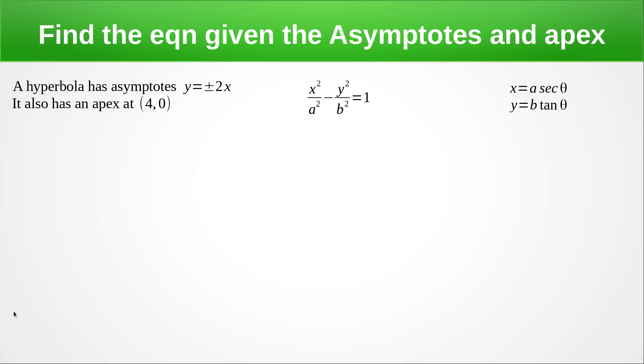Okay, so let's look where we find the equation of the hyperbola and we're given the asymptote and the apex. So what we need to find is the value of a and b. So the first thing I'll do is find the centre. And the centre is going to be where the asymptotes cross, which is at 0, 0.